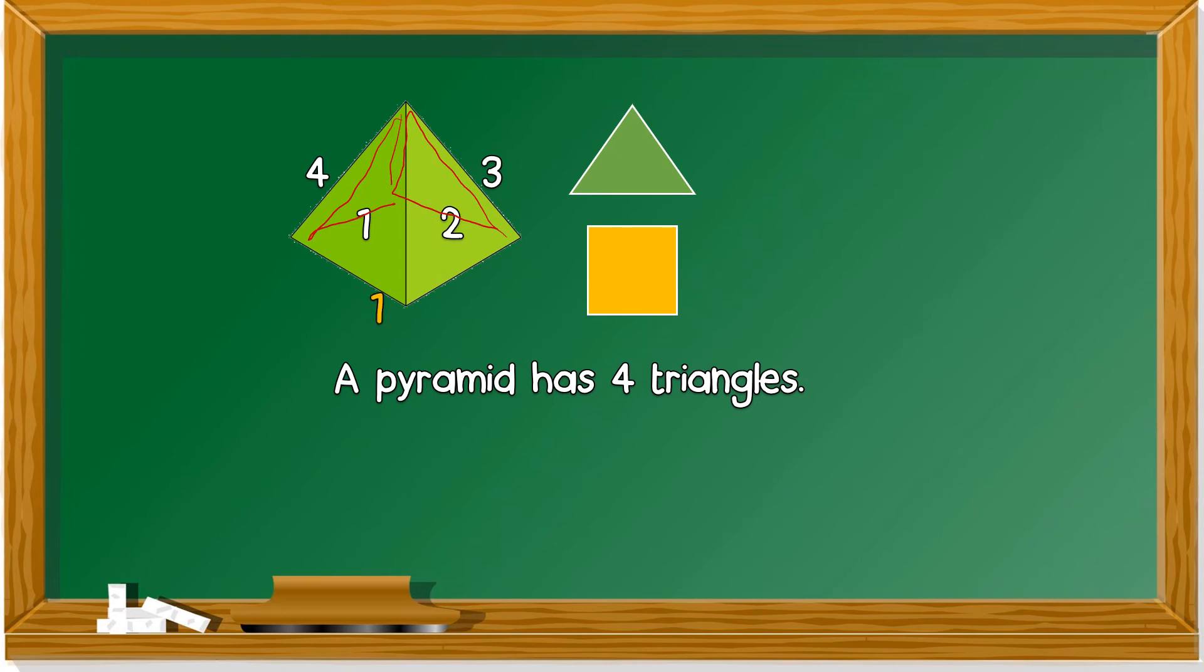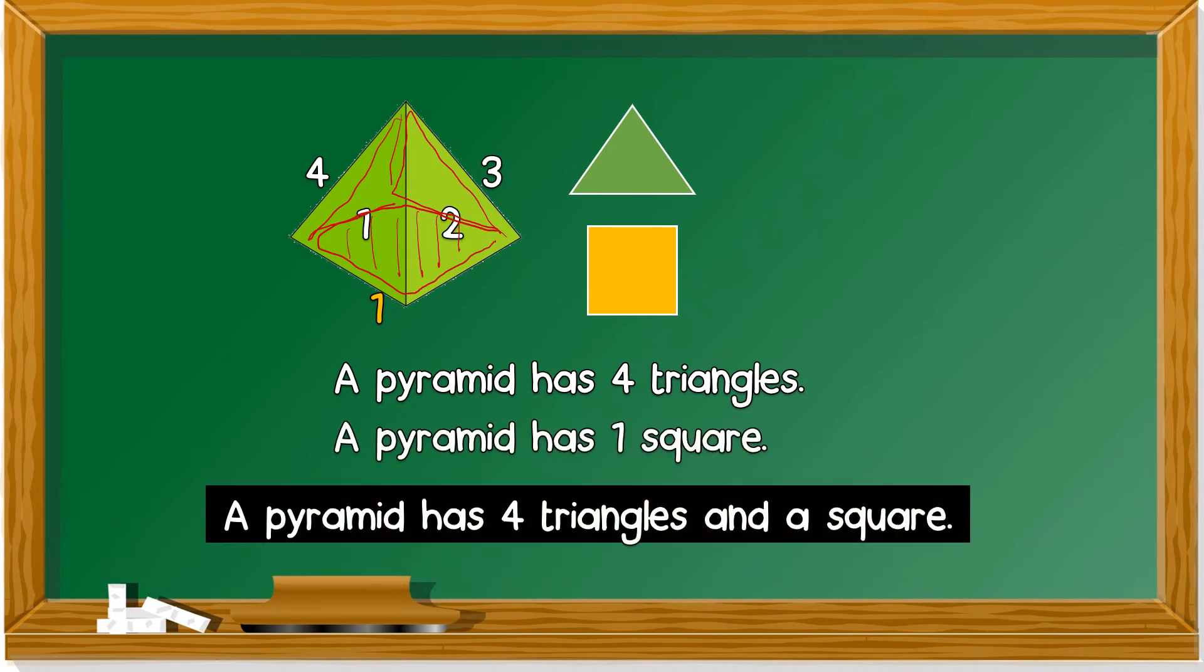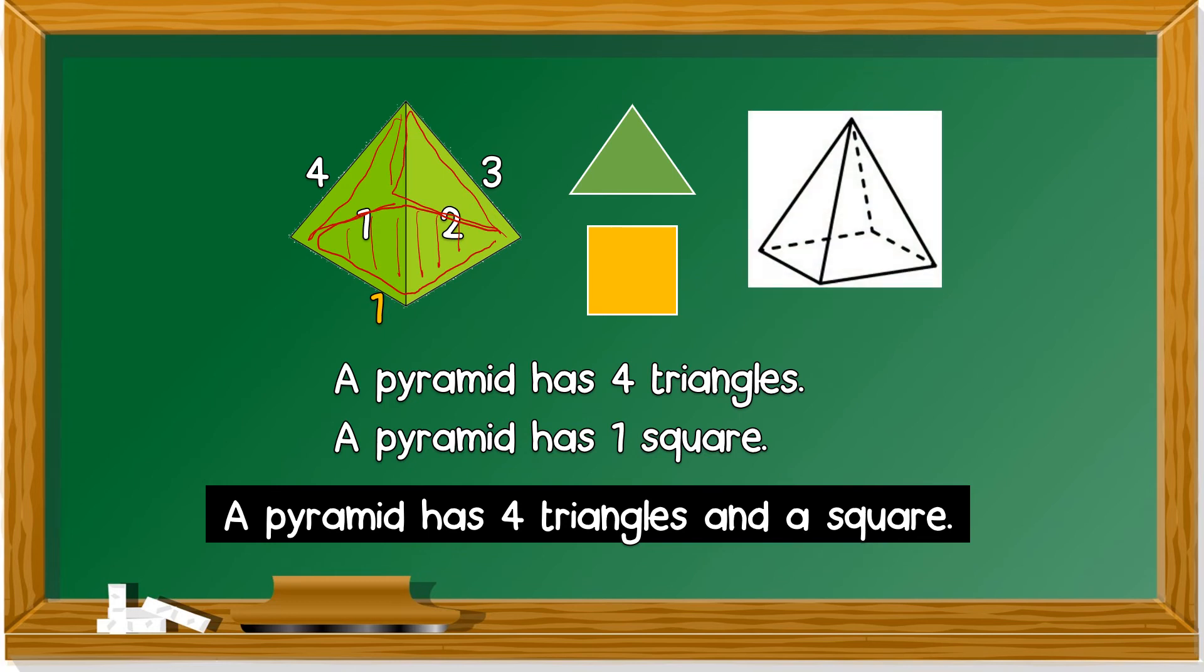The square is at the bottom here. This is the square, 1 square. So this pyramid has 4 triangles and a square. Let's look at this one. We count again the triangle. This one is 1, 2 at the side, 3 behind, number 4. And as for the square is at the bottom. So a pyramid has 4 triangles and a square.